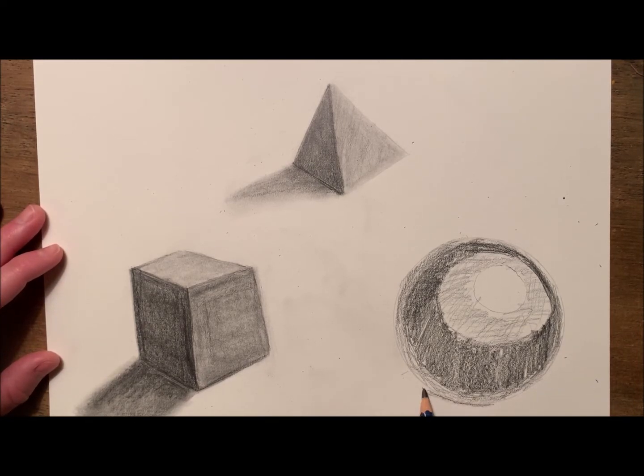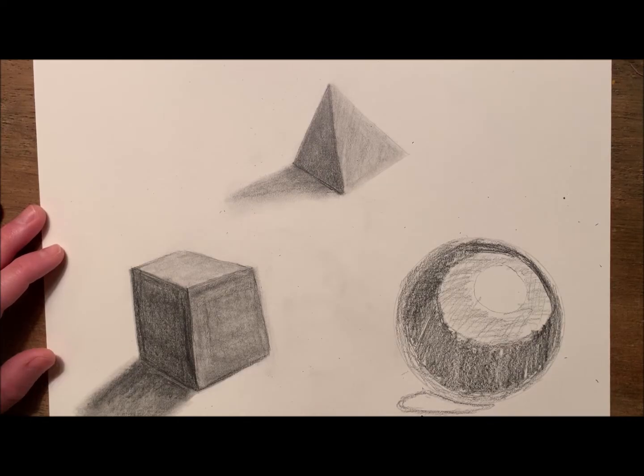Now I'm going to add a shadow, and this shadow will actually be in two parts. First, I'm going to add a little bit of an oval coming out from underneath my sphere, and this will be the darkest shadow. Then I'm going to cast another shadow outside of that, and that will be a lighter value.